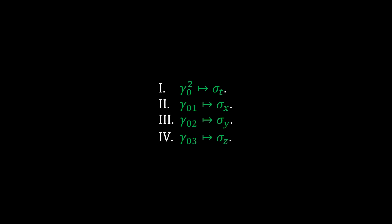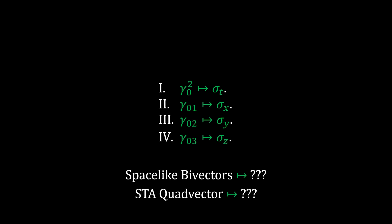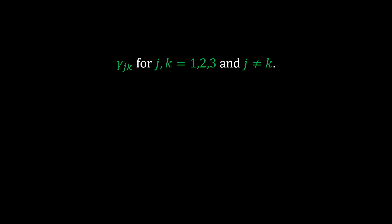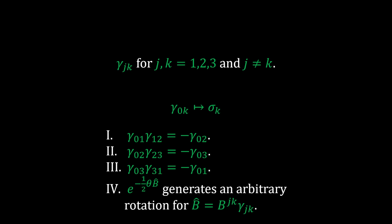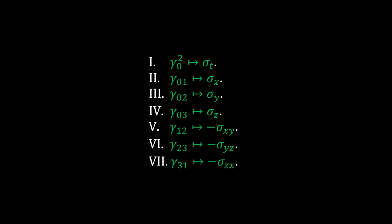While it's been shown that the spacetime split maps to the paravector representation of the algebra of physical space, it doesn't prove that the even subalgebra of the spacetime algebra is isomorphic to the algebra of physical space. To show this, it's necessary to find what the spacelike bivectors and the spacetime algebra quad vector map to within the algebra of physical space. Recall that spacelike bivectors are bivectors with no timelike basis component, and that timelike bivectors behave as three-dimensional vectors within the even subalgebra. The spacelike bivectors then act like the generators of rotations for these three-dimensional vectors — and in the algebra of physical space, only the traditional bivectors are capable of that. Therefore, a simple mapping of the spacetime algebra's spacelike bivectors to the algebra of physical space's bivectors is created.